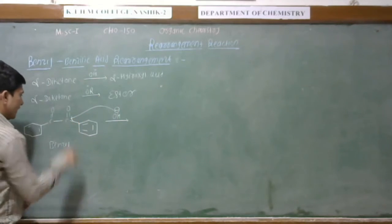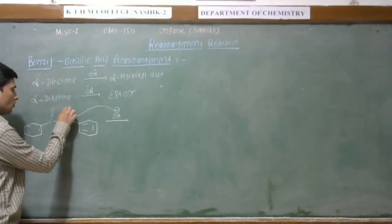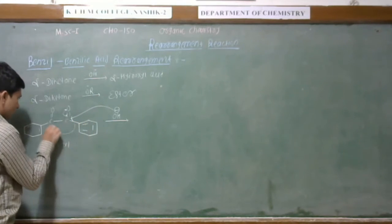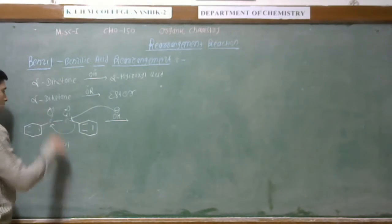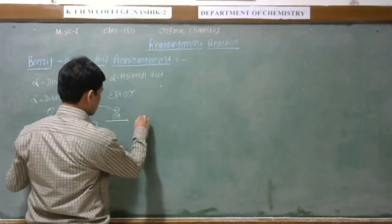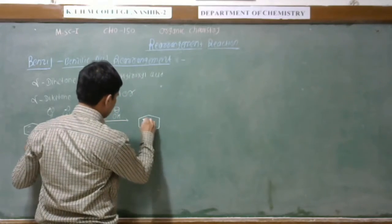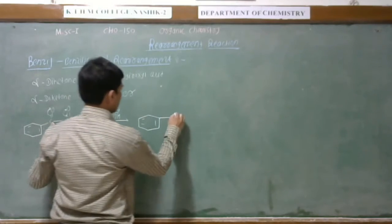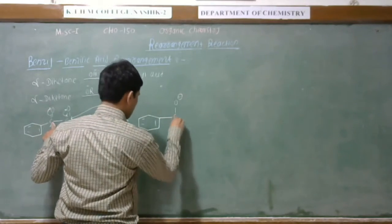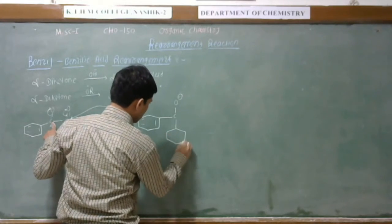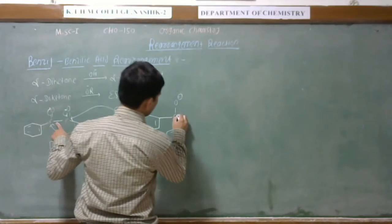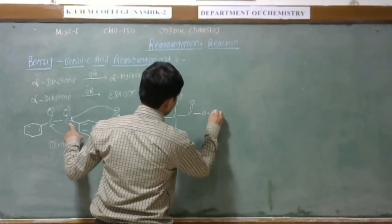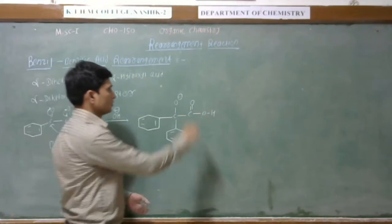When this benzyl reacts with the hydroxyl group, the hydroxyl group attacks here, this bond gets reformed, and the benzyl group shifts to this carbon, which then opens. From the left hand side you can see this benzyl ring, and this benzyl ring has a C–O minus. Now another benzyl ring shifts from one position, and there is C double bond O attached to the hydrogen and to the hydroxyl group.